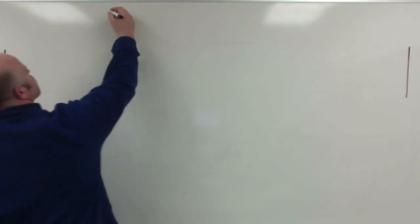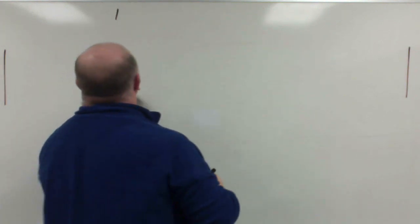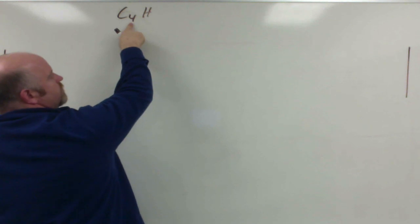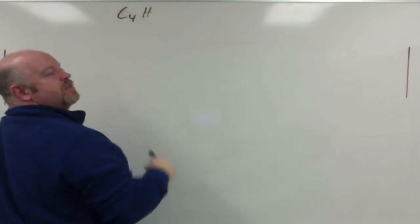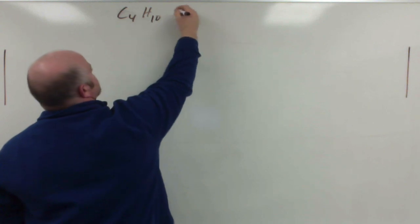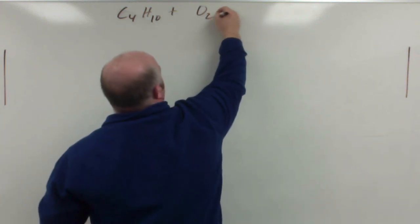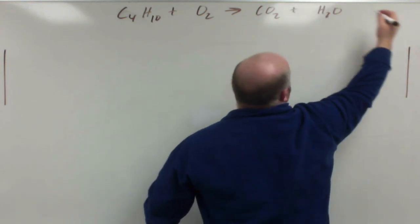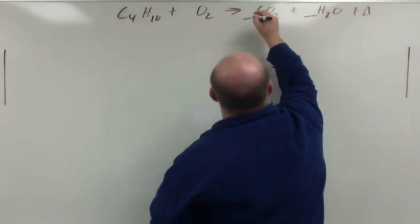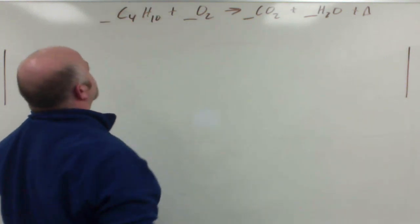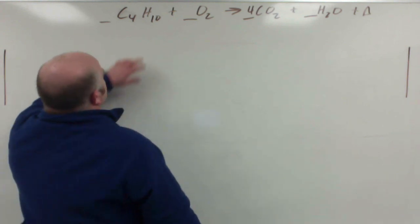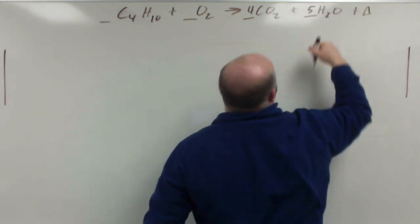Okay, so we're combusting 25 milliliters of liquid butane. So I have butane, which is C4H... 4 carbons, so 4 times 2 is 8, 8 plus 2 is 10, so 10 hydrogens, reacting with oxygen to make carbon dioxide and water and heat energy. I have 4 carbons, so I'm gonna make a 4 here. 10 hydrogen, so I need a 5 here.